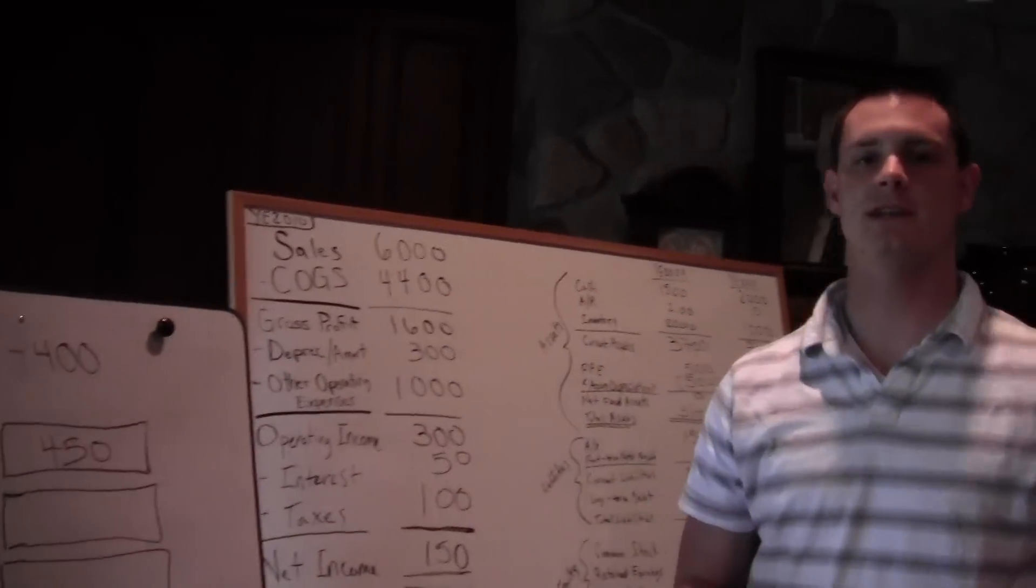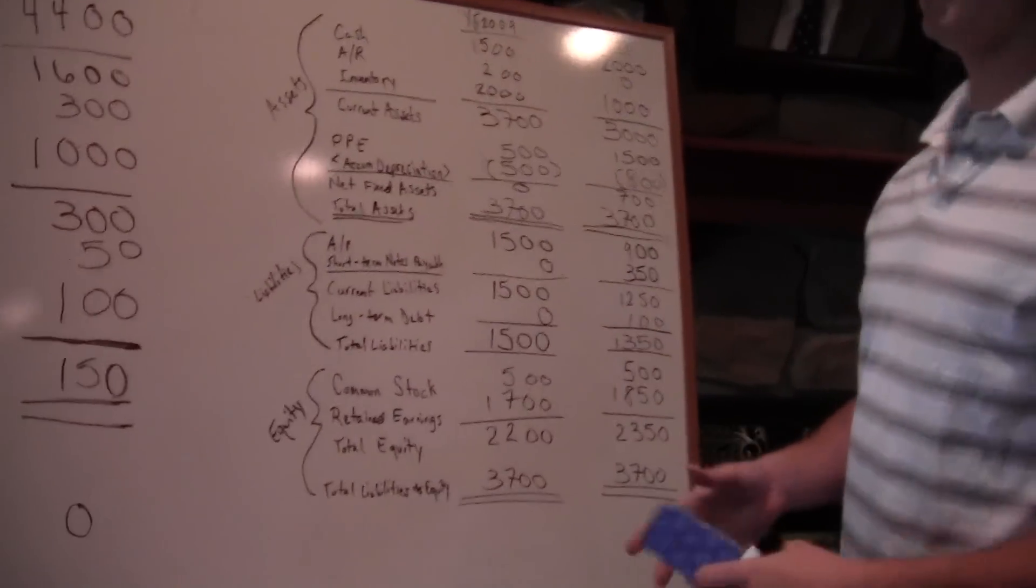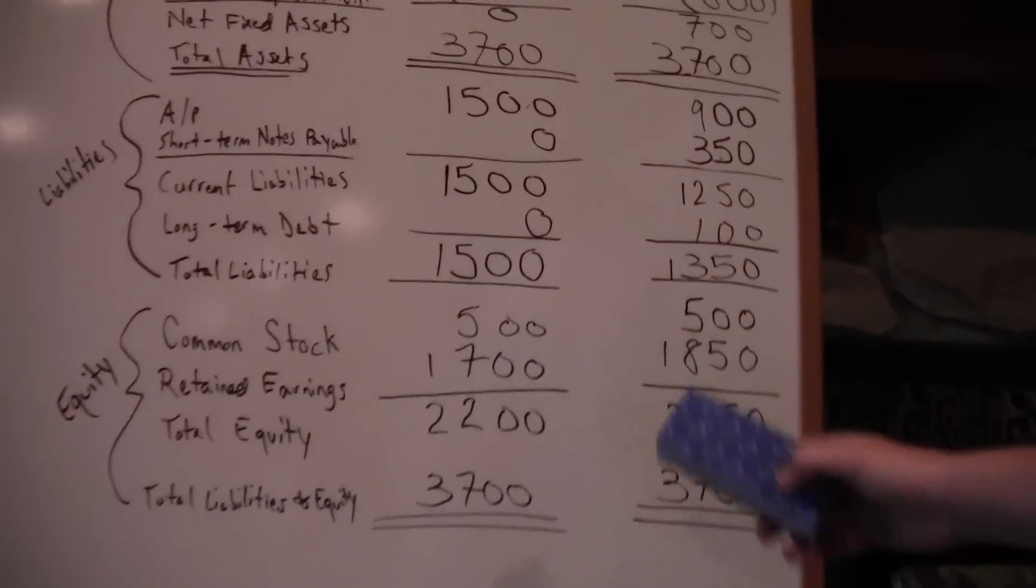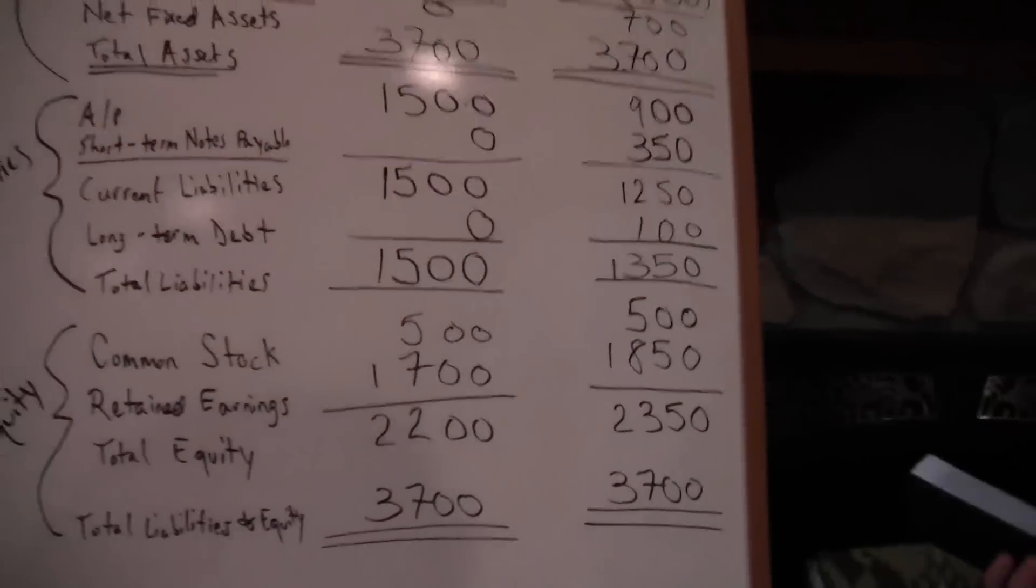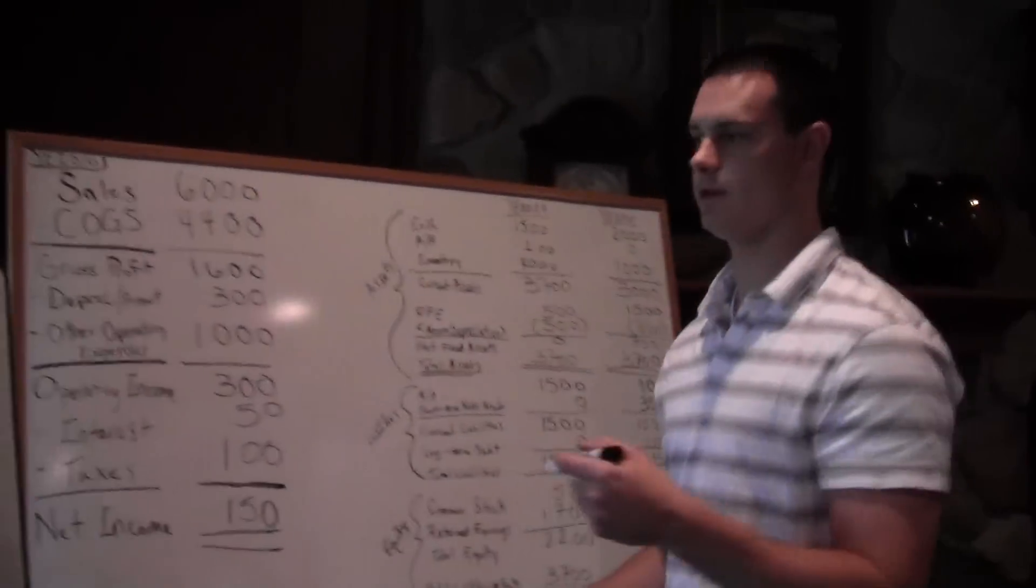Now let's look at our change in common stock. That's in the equity section of our balance sheet. We had $500 in 2010 and $500 in 2009, so no change. I'll put zero.